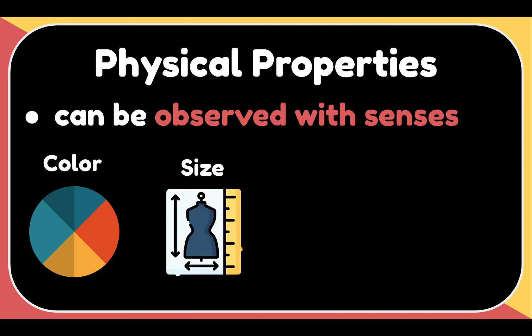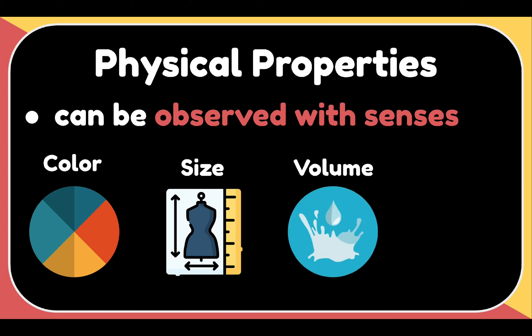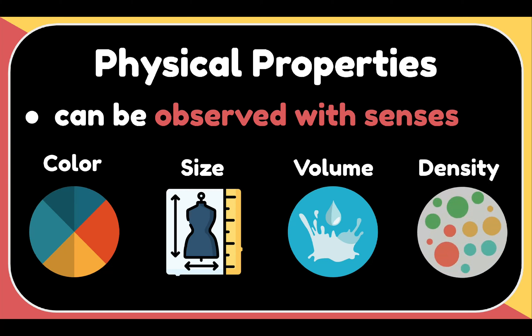We also have size, or the overall dimensions of an object. Next is volume. It is the amount of space a substance or object occupies. And we also have density, which is the ratio of mass and volume in a substance.